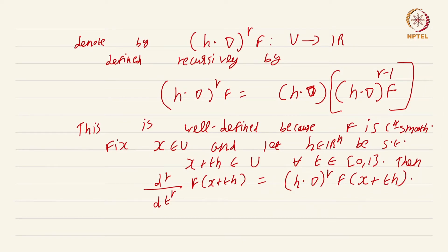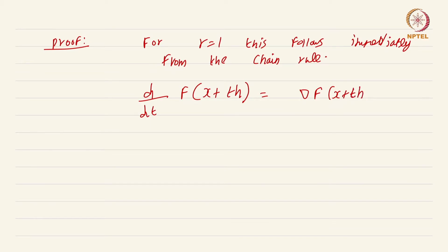Let us prove this. For r equal to 1 this follows immediately from the chain rule. We have d by dt of f of x plus th. This is nothing but gradient of f at the point x plus th, then you have to take the derivative of x plus th with respect to t and that is just going to leave you with the vector h.